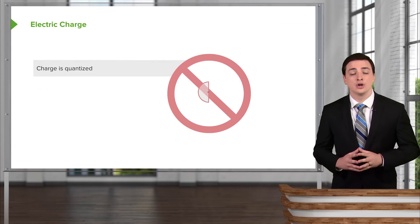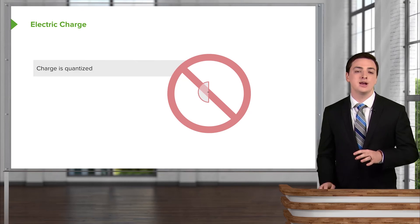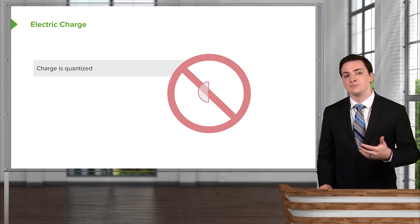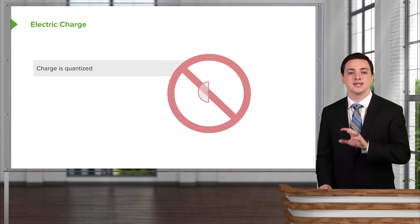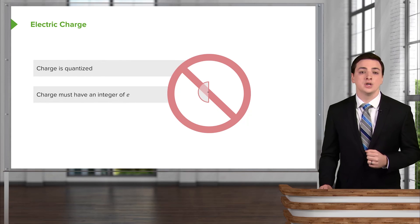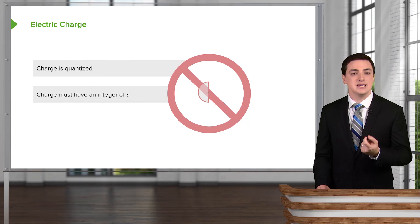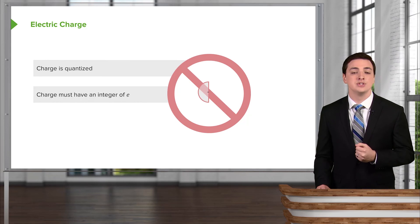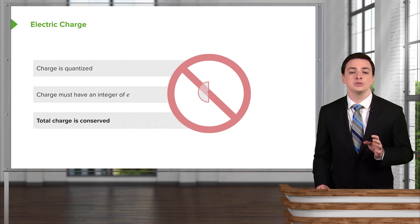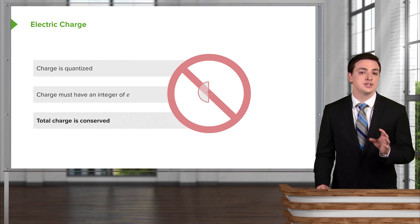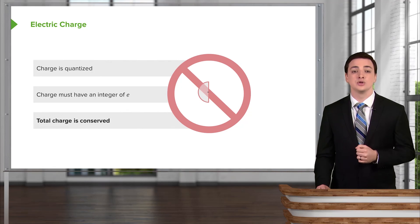There are a few very important things to know about charge. One is that charge is quantized. What we mean by that is you cannot have a half of an electric charge, or 1.5 electric charges. You have to come in discrete, quantized units of charge. Also, the charge must be an integer of this basic value that we saw, which is e, that very tiny number of the charge of the electron and the charge of the proton. Finally, the total charge is conserved. This charge cannot disappear anywhere, nor can charge just come from somewhere in a given closed system.